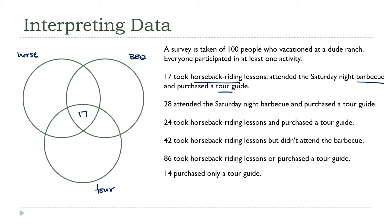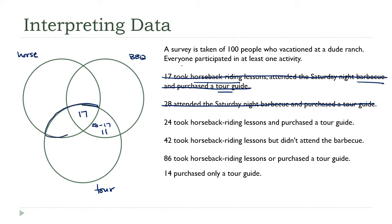Barbecue and tour guide together is this section, and the total of these two regions must be 28. That means the outer part of that intersection is 28 minus the 17 already counted, which is 11. Next, 24 took horseback riding and a tour guide — that's this section — and the total must be 24. So the missing part is 24 minus 17, which is 7.